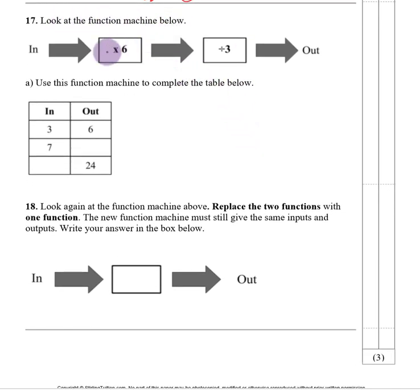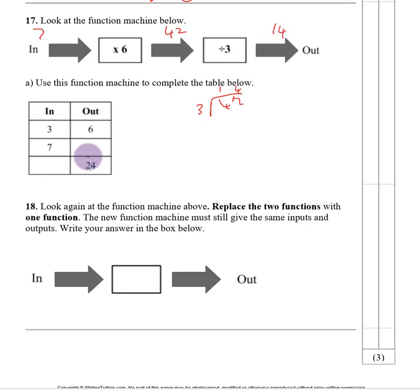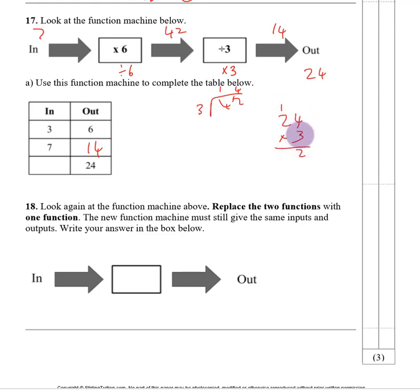Number seventeen. Look at the function machine: number in, times by 6, divide by 3, number out. When 3 goes in, 6 comes out. For 7: 7 times 6 is 42, then 42 divided by 3 is 14. So the number coming out is 14. For the inverse with output 24: do the opposite — times by 3, then divide by 6. 24 times 3: 3 times 4 is 12, carry 1; 3 times 2 is 6, plus 1 is 7, giving 72. Then 72 divided by 6 gives 12. So the number in is 12.